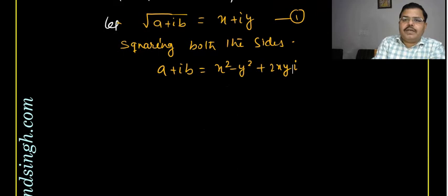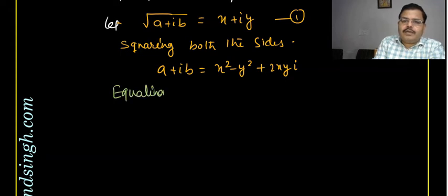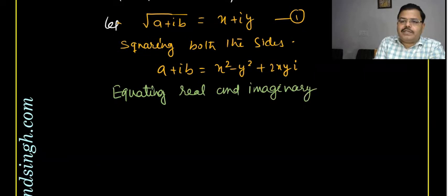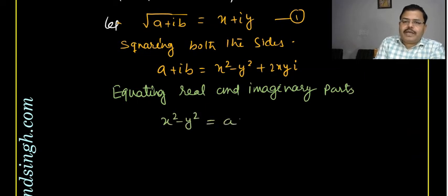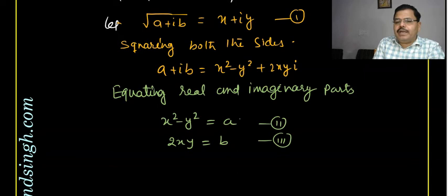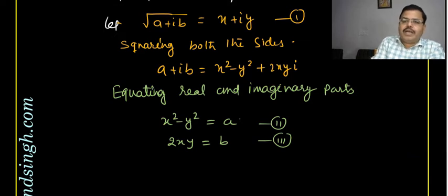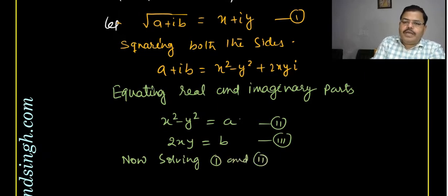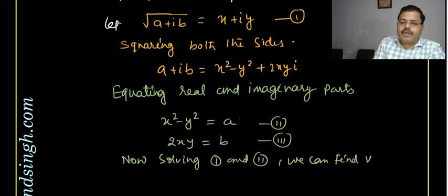Now equating real and imaginary parts on both sides, we have x²−y² = a and 2xy = b. These are two equations in two unknowns, so we can solve them simultaneously to find the values of x and y. This is the basic theory of this lesson.